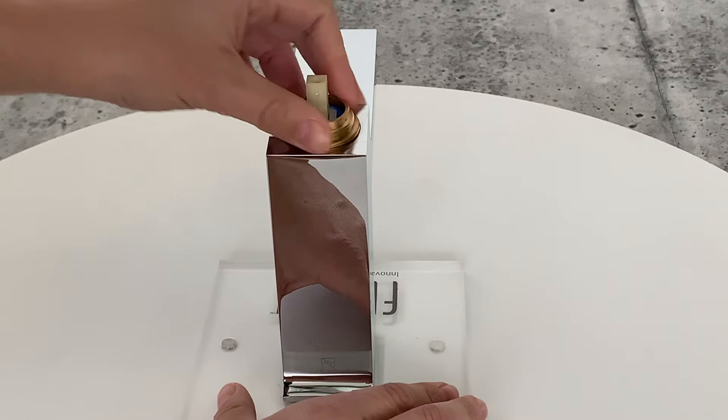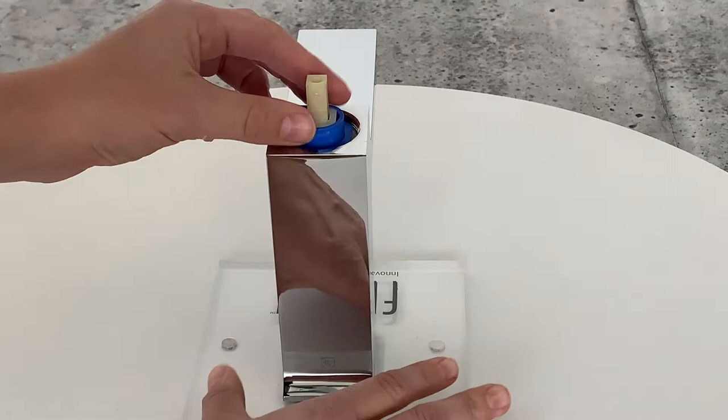The last part to remove is the ceramic disc cartridge itself. To remove it you may have to wiggle it and then simply pull it upwards.